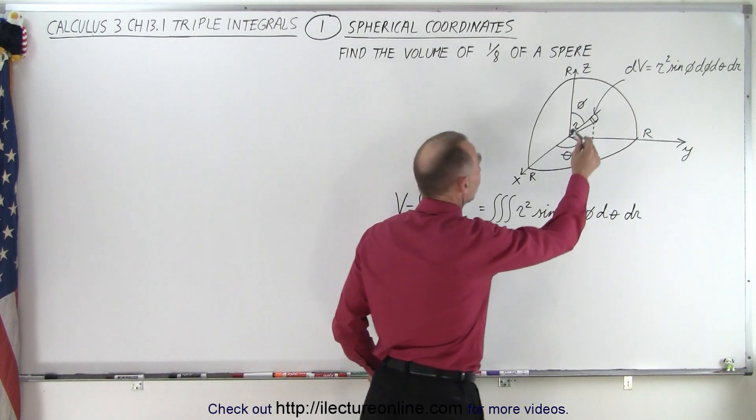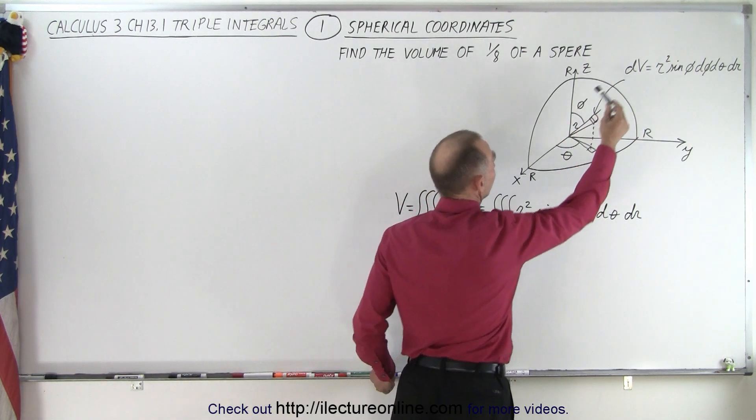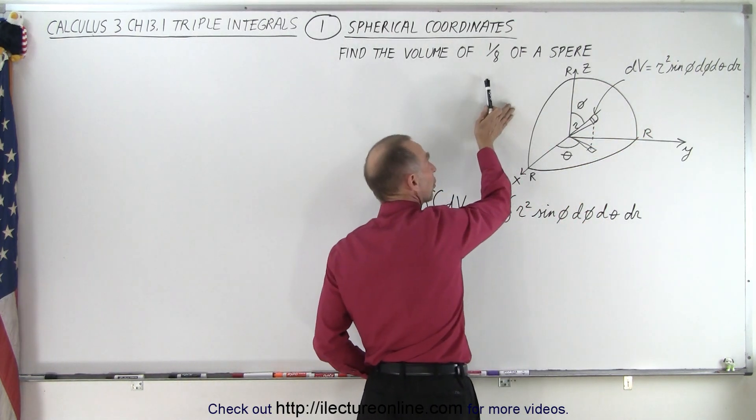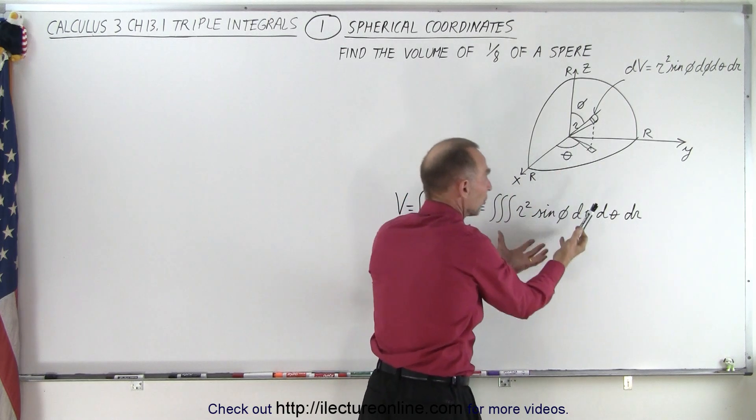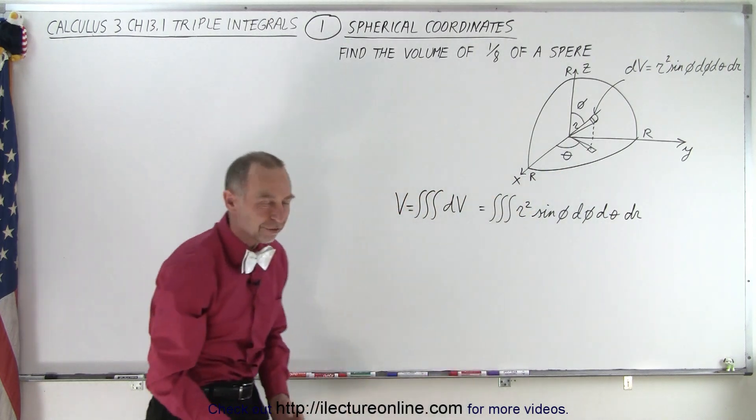So here we're just going to do one-eighth of the total sphere. Notice we have another eight on the back side, two more on the other side on the left side, and four more on the bottom to form a complete sphere.